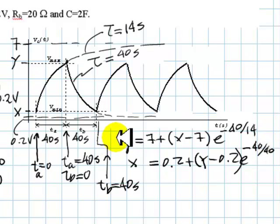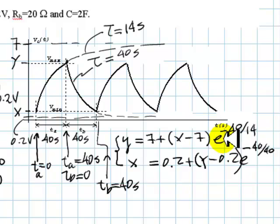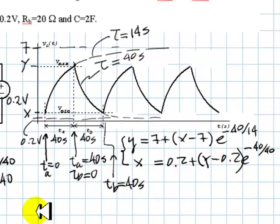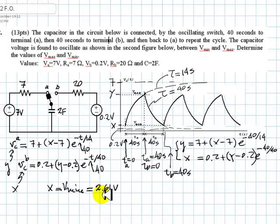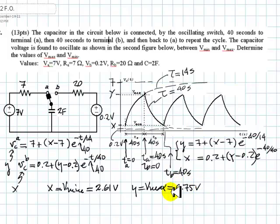We have two equations and two unknowns. These equations look like exponentials, but they are actually linear — e^(−1) is just a number, e^(−40/14) is another number. So these are linear algebraic equations in X and Y. We can solve them. From their solution, we find that X, which is Vmin, is 2.61 volts, and Y, which is Vmax, is 6.75 volts. Those are the answers to this question.